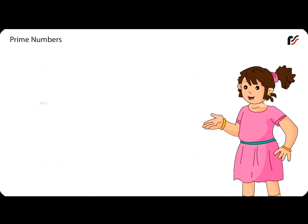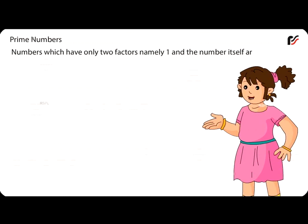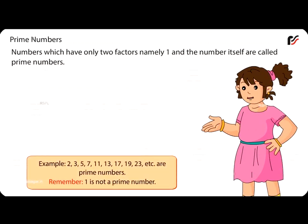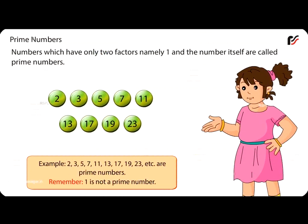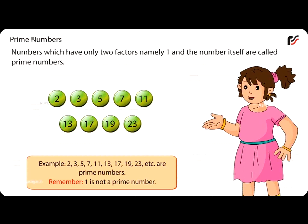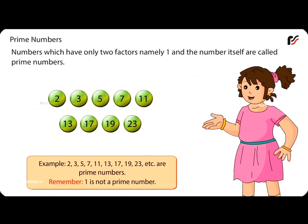Prime Numbers: Numbers which have only 2 factors, namely 1 and the number itself, are called prime numbers. For example, 2, 3, 5, 7, 11, 13, 17, 19, 23, etc. are prime numbers. Remember, 1 is not a prime number.